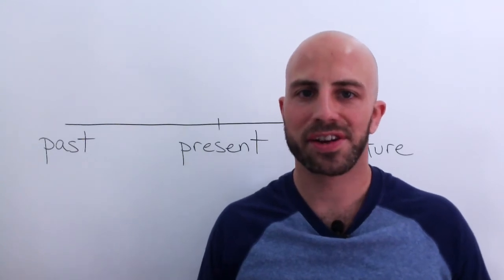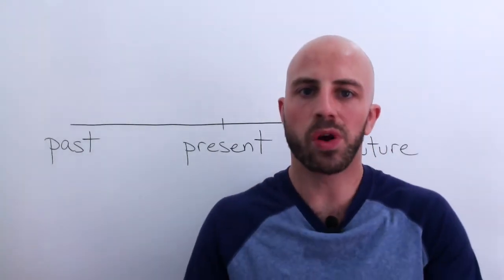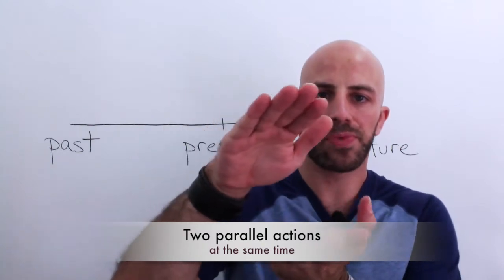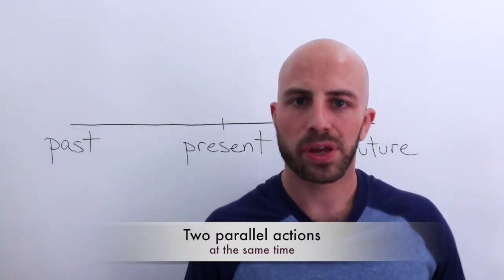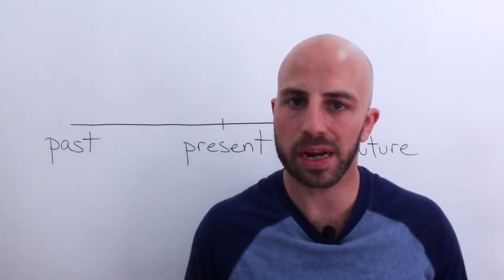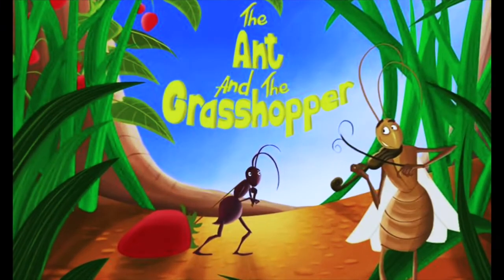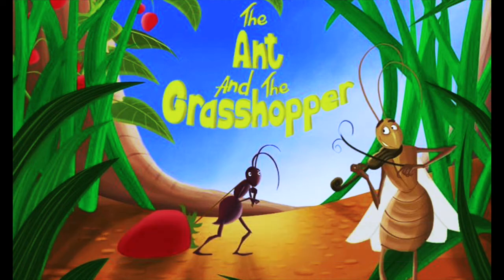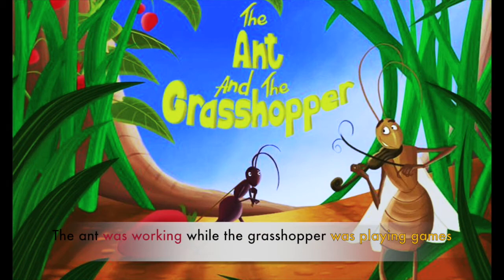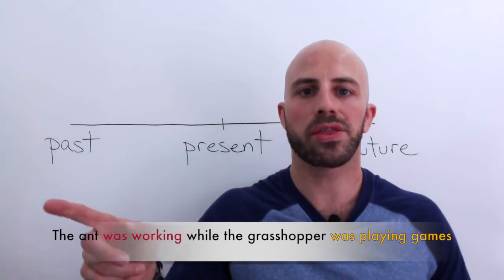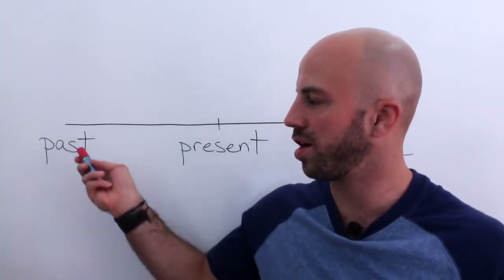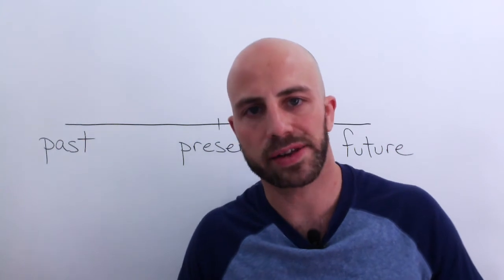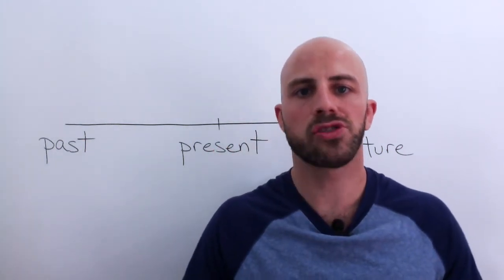Let's move on to rule number two. We use the past continuous tense when we're referring to two parallel actions that were happening at the same time. For example: 'The ant was working while the grasshopper was playing games.' How would we draw on the timeline two parallel actions happening at the same time? Pause the video and draw on your timeline.